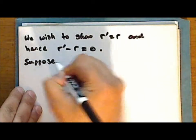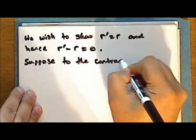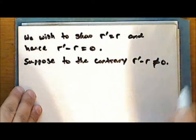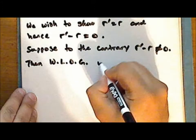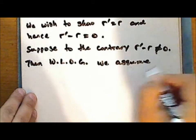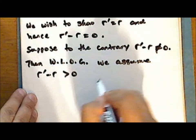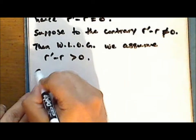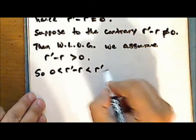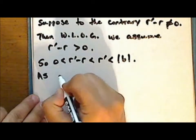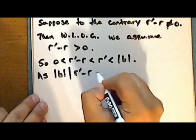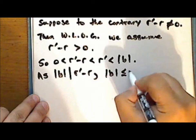Suppose to the contrary that r prime minus r is not equal to zero. Then without loss of generality, we may assume that r prime minus r is greater than zero. So r prime minus r is greater than zero, r prime minus r is certainly less than r prime since both are positive integers, and r prime is strictly less than the absolute value of b. Now as the absolute value of b divides r prime minus r, we have that the absolute value of b is less than or equal to r prime minus r.